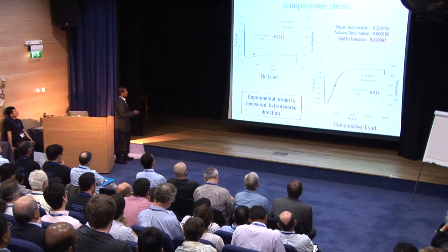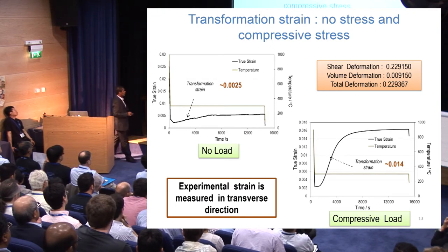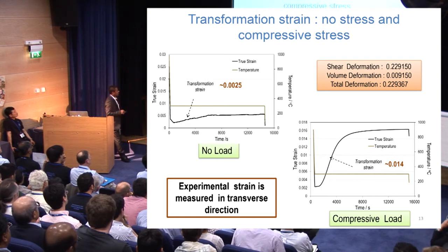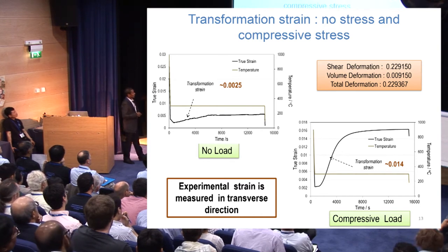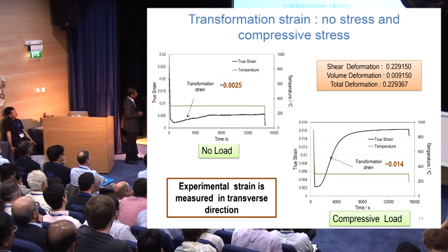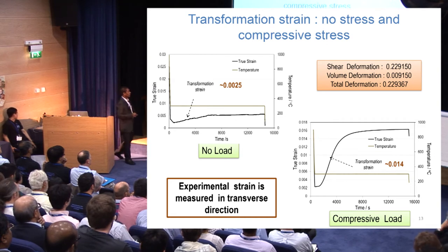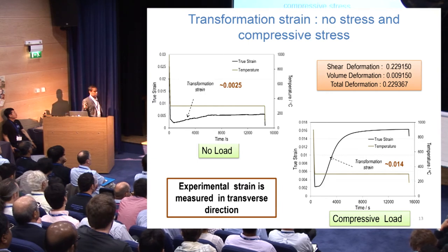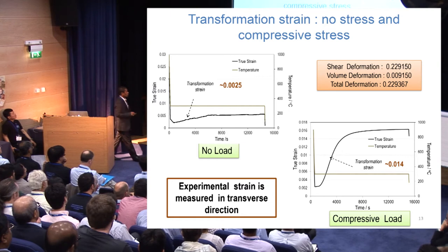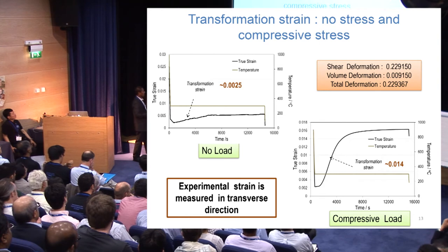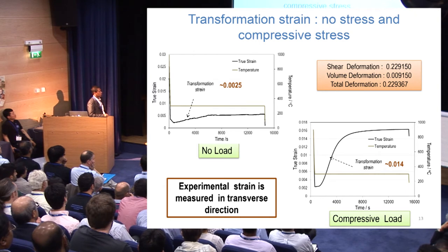From the dilatometry experiment, the transformation strain when bainite transforms without any load is very low, close to what we get from the phenomenological theory of martensite crystallography when accounting for 60 percent bainite and the volumetric correction factor. However, the strain increases considerably — to about 0.014 — when bainite transforms under compressive load. Similarly, under tensile stress, the transformation strain is negative, meaning compression gives a positive or expansion-type transformation strain.